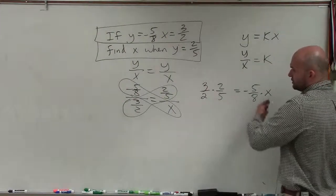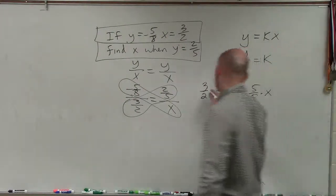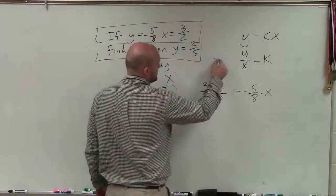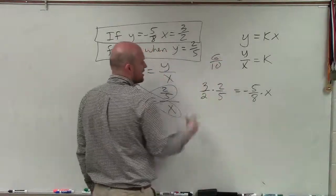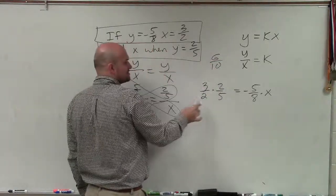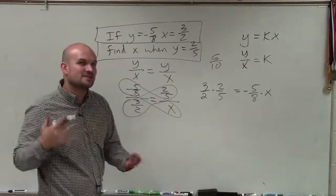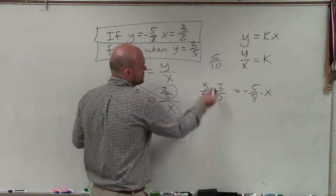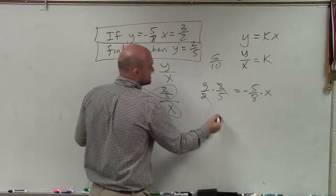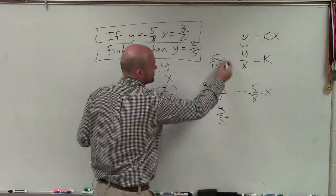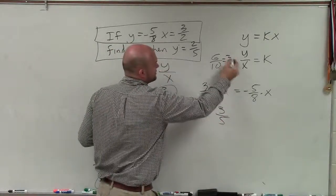Now, when we're multiplying across, you could simply just multiply 3 times 2, which is 6, and 2 times 5, which is 10. So you could get 6 tenths, just multiply across. But then you have to simplify this. So it's always helpful to try to simplify before. And we notice that 2 divides into 2. So basically, I just have this as 3 fifths, which 3 tenths reduced is 3 fifths.